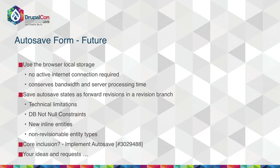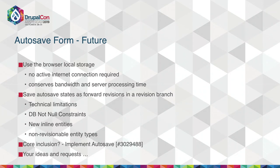Some future tasks on our plan are to make it possible to save autosave states in the browser local storage, to preserve bandwidth and also make it possible to save autosave states without an active internet connection — for example, when somebody is on the train working on an article. There are core conversations about implementing autosave states as forward revisions, which unfortunately have a lot of technical limitations, like unknown constraints in the database for missing values and specific fields, or non-revisionable entity types. Autosave Form doesn't care if the entity type is revisionable or not. There is a core conversation and it's being considered for inclusion in core, and your ideas are welcome.